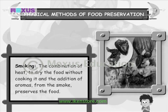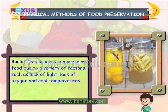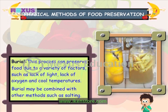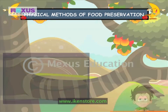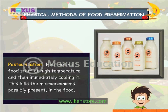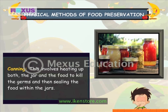Smoking: the combination of heat to dry the food without cooking it and the addition of aromas from the smoke preserves the food. Burial: this process can preserve food due to a variety of factors such as lack of light, lack of oxygen, and cool temperatures. Burial may be combined with other methods such as salting. Pasteurization: heating the food stuff at high temperature and then immediately cooling it — this kills the microorganisms possibly present in the food. Canning: this involves heating up both the jar and the food to kill the germs and then sealing the food within the jars.